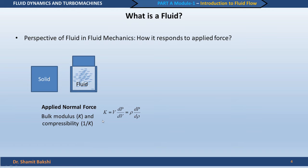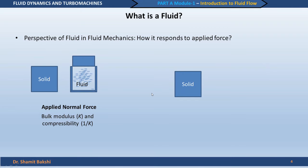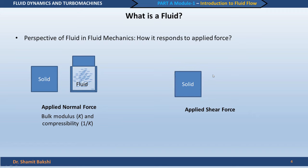What distinguishes a solid from a fluid is better understood when we apply a shear force — a force parallel to the surface. When we apply a shear force to a solid, the solid deforms and when we withdraw the force, it comes back to its original shape, provided the applied shear is within the elastic limit. So even under the application of a shear force, the solid behaves elastically.